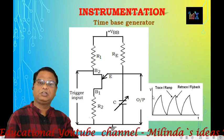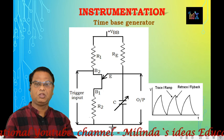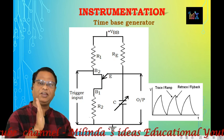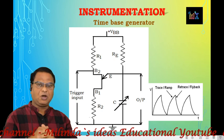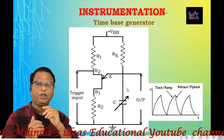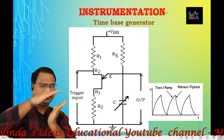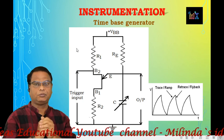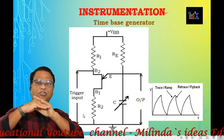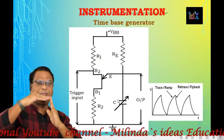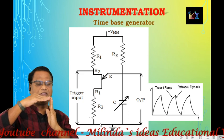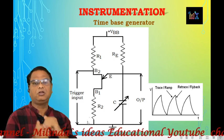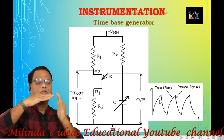The intrinsic standoff potential is given by the intrinsic standoff ratio η multiplied by the applied potential VBB. The ratio η is typically 0.5 to 0.8, and for practical purposes is approximately 0.65. So, with VBB of 10 volts, the capacitor must charge to approximately 6.5 volts to cross the threshold. At that point the UJT becomes ON. When UJT turns ON, it offers low resistance between base 1 and the emitter circuit.